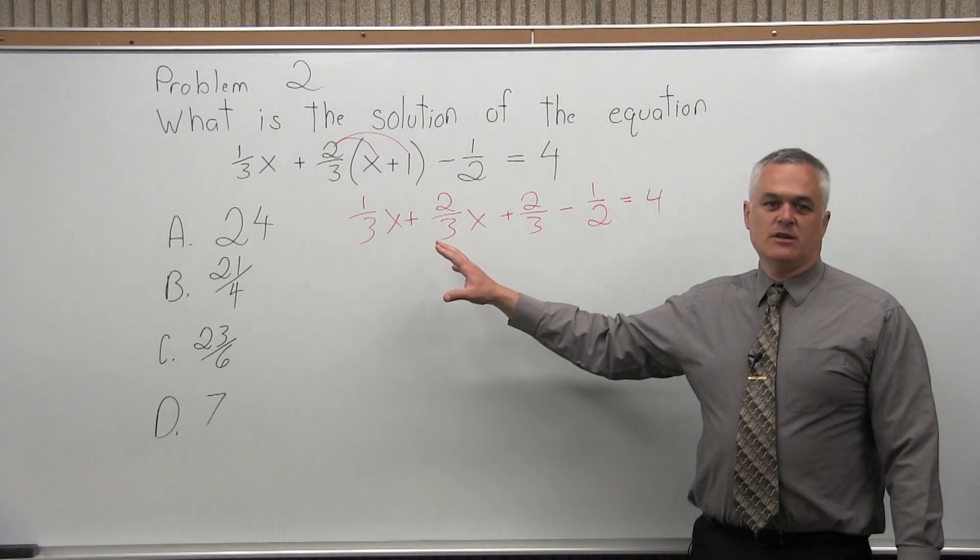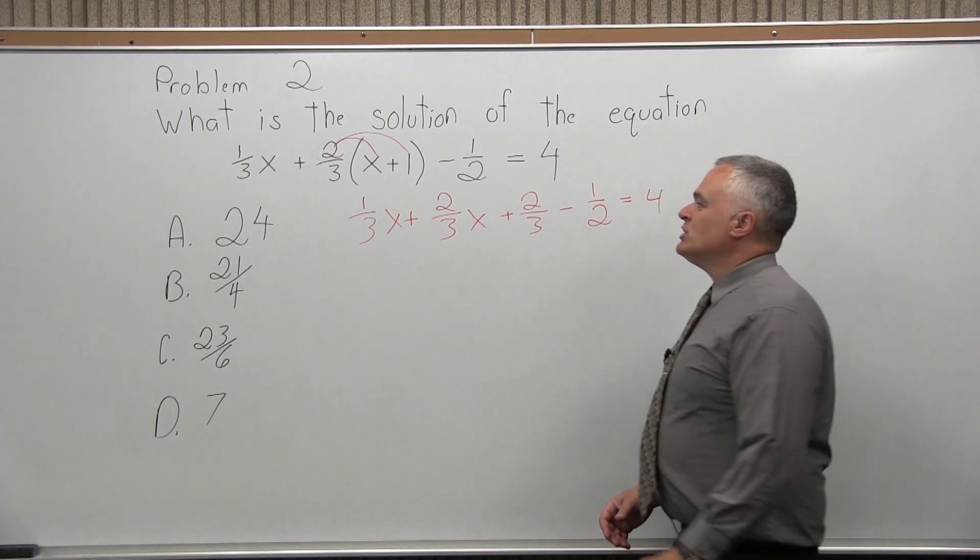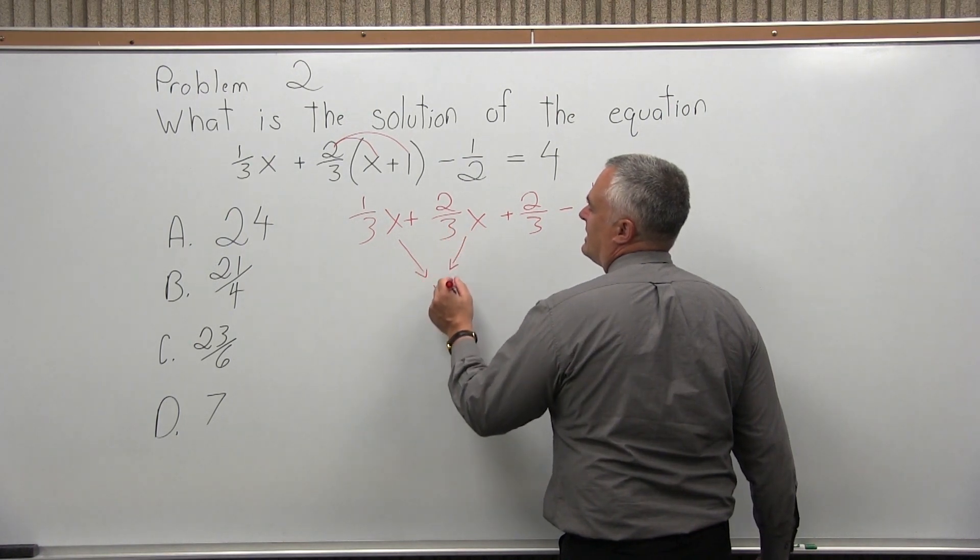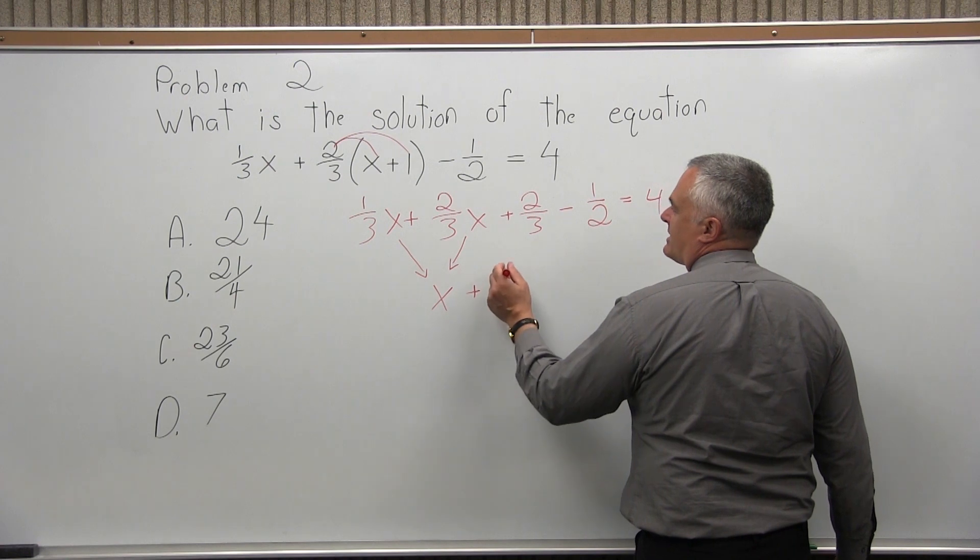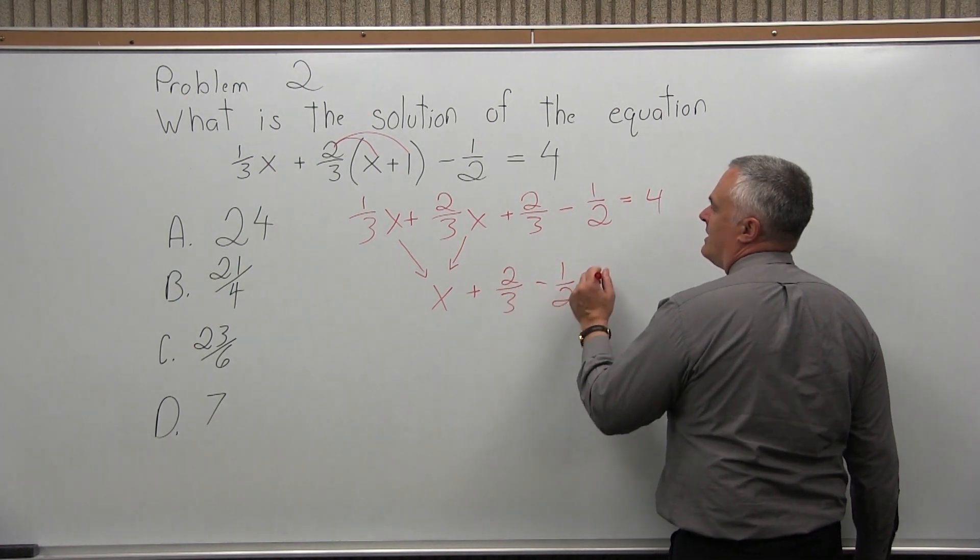After the parentheses, I have minus 1 half, then equals 4. Now, my parentheses have been cleared out. What I want to do is get x on one side of the equals, numbers on the other side of the equals.